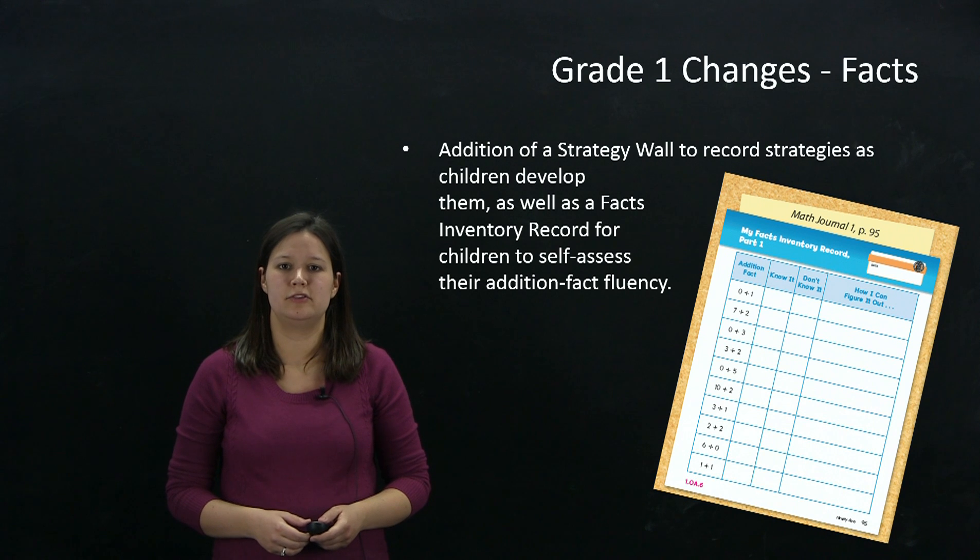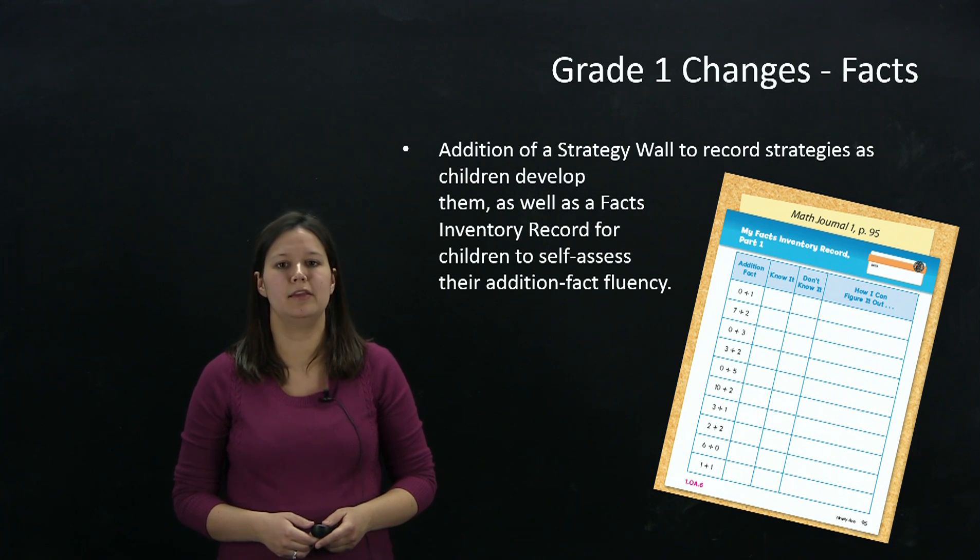We've also refined two tools that students use to develop facility with facts. These include the addition of a strategy wall that the teacher begins keeping in Unit 2, which is an ongoing record of the strategies that children know to solve facts. And children also complete a facts inventory record where they self-assess their addition fact fluency with groups of related addition facts.